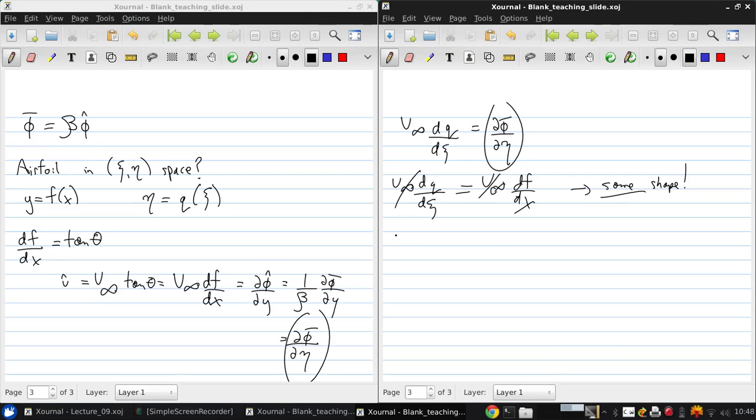Now, we had the linearized pressure coefficient last time as minus 2 u hat over v infinity. Now, if we use our transformation, we can write this in terms of the potential and then apply the definition of the new potential and then apply the change of coordinate systems, where this, by definition, is u bar.